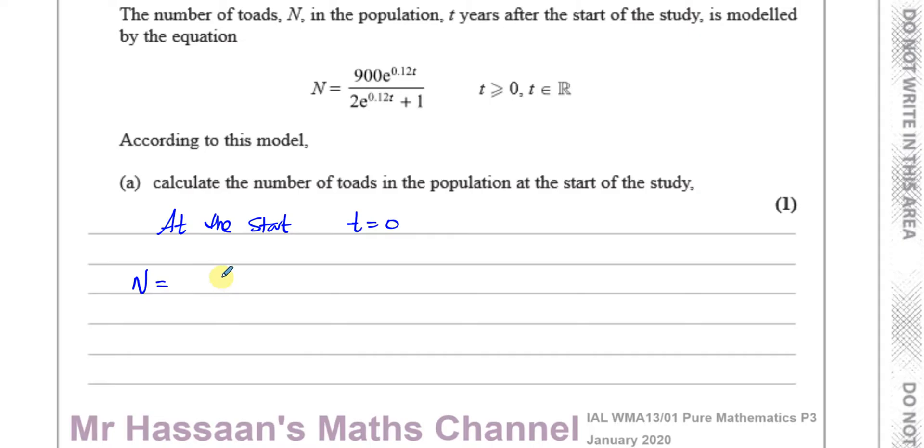So we can now substitute t equals 0 into our equation and find what N is. So N equals 900 times e to the power of 0 over 2 times e to the power of 0 plus 1. So e to the power of 0 as we know is equal to 1. So this is 900 over 2 plus 1, which is 3, which is 300.